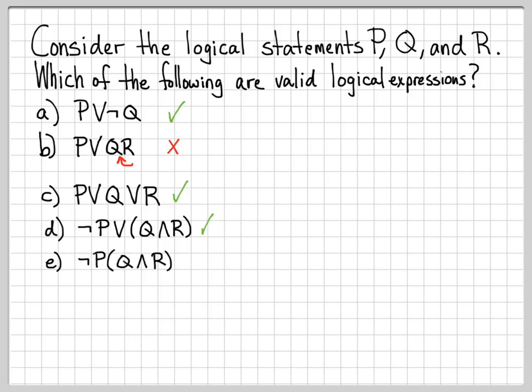What about part E? This is very similar to part D, except the connective between the two parts has been removed. So this doesn't make any sense — we have 'not P' and then just a parenthesis with no connective in between. I need some type of connective between these logical statements, and it's missing. So this is not a legitimate thing to write down. You have to have a connective between logical expressions.